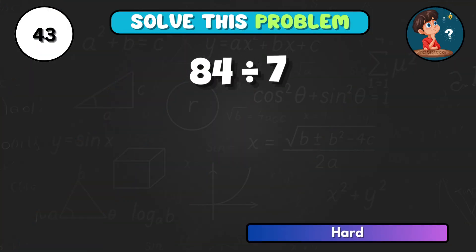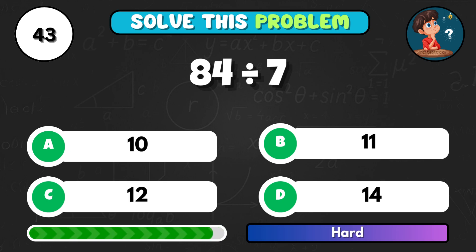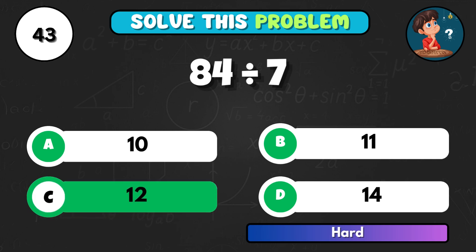84 divided by 7, how about that? Correct letter C equals 12.